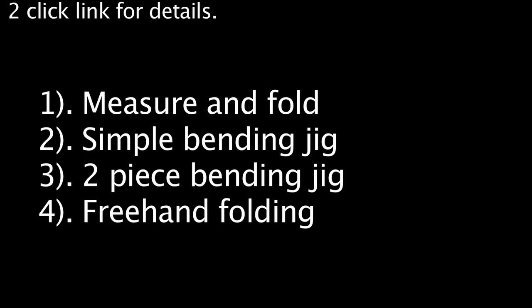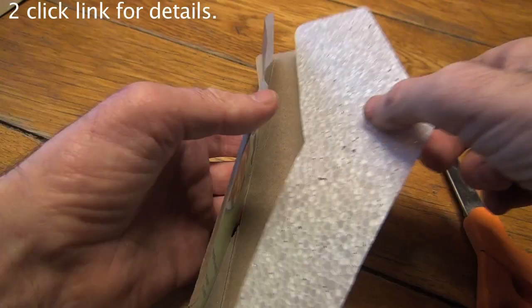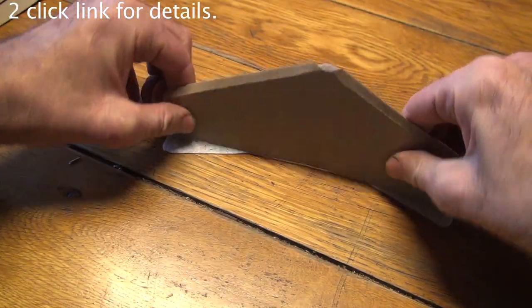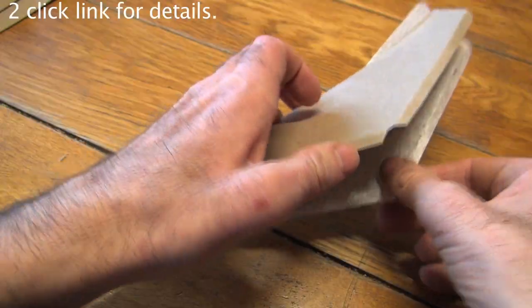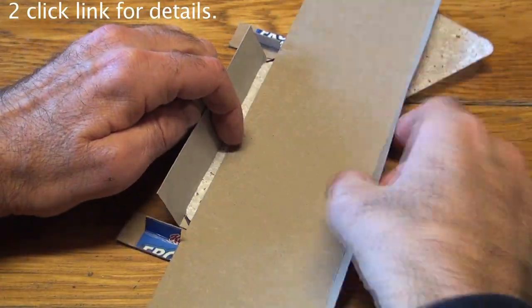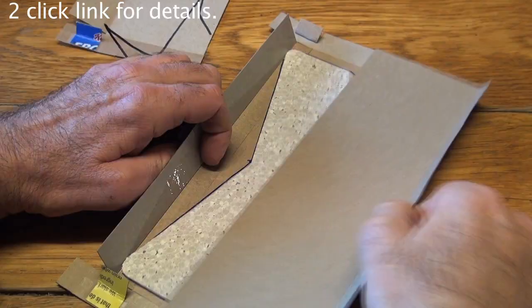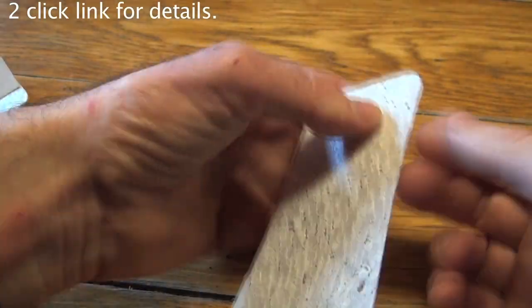The bending methods are measuring and bending, a simple cardboard jig that sandwiches the foam for bending, a more complex two-piece jig for the front and the back, and freehand bending.